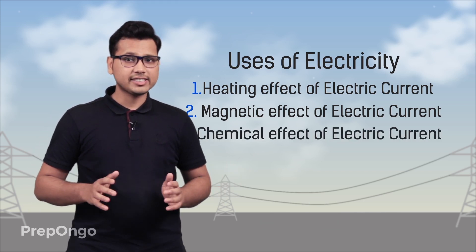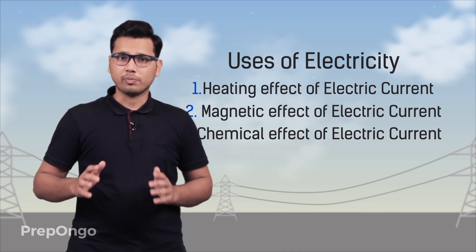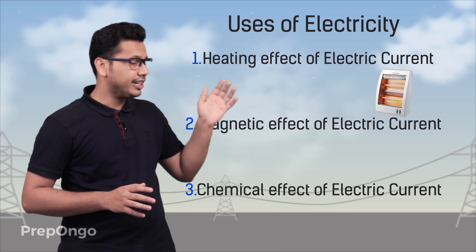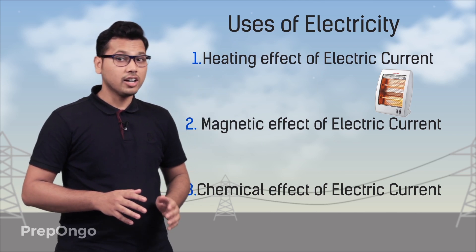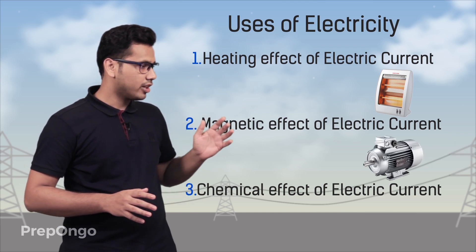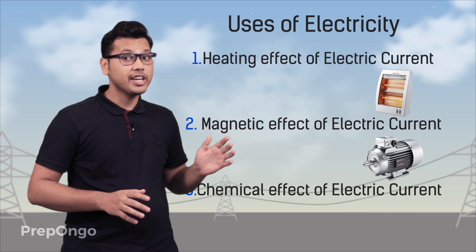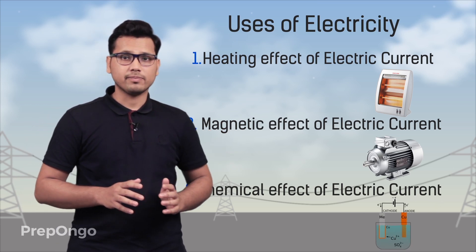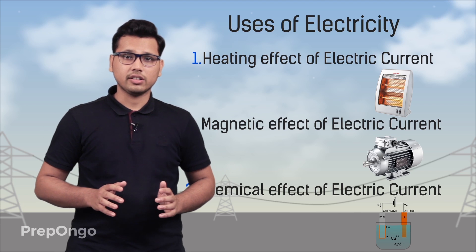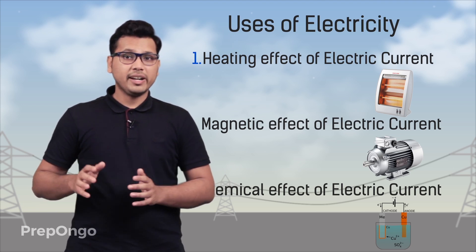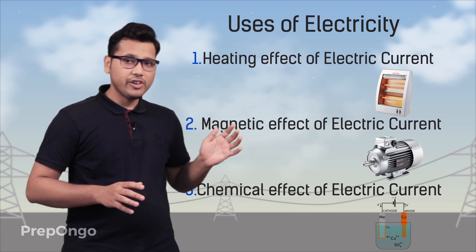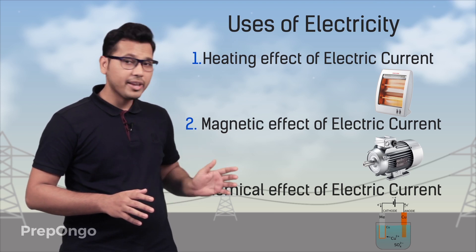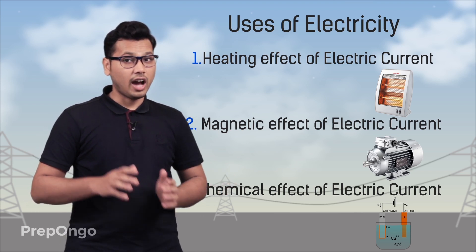Now different devices use different effects for their operations. The electric heater uses the heating effect of electric current, the electric motor uses the magnetic effect, and electroplating uses the chemical effect of electric current. We will be discussing the magnetic effect in our next chapter and the chemical effect in higher classes.